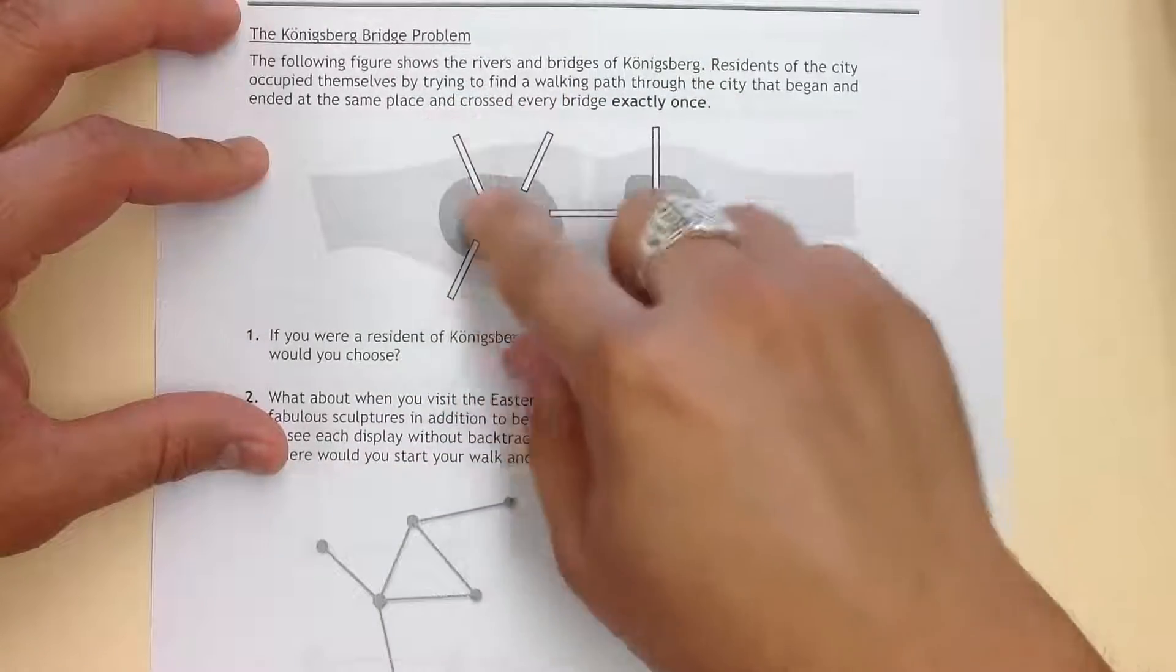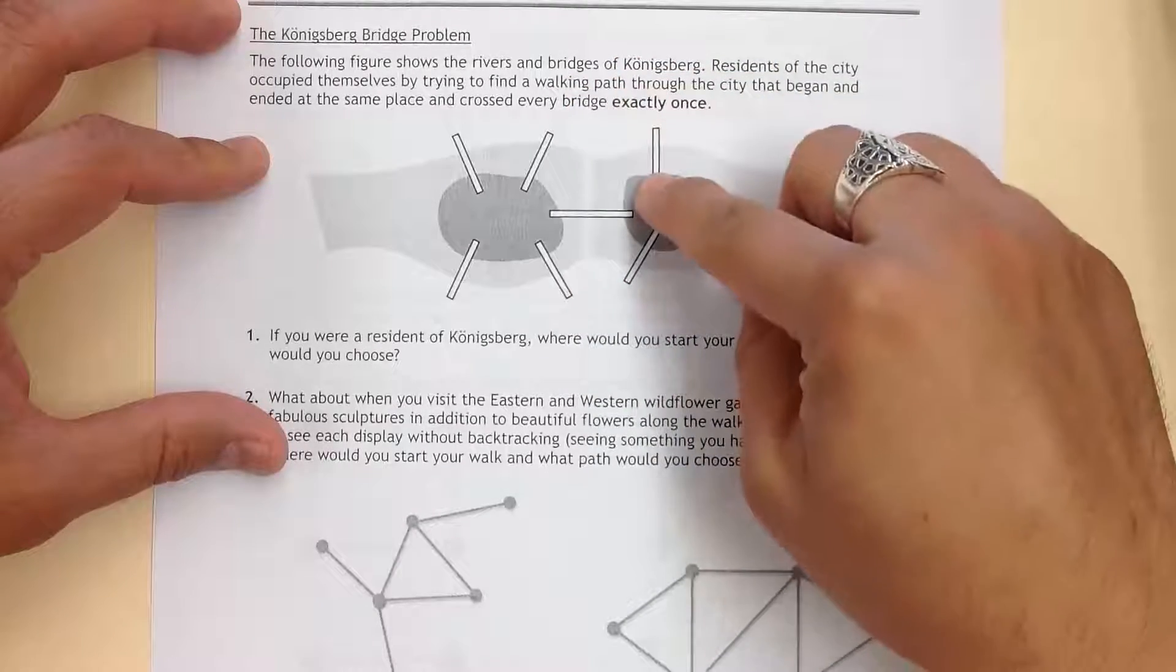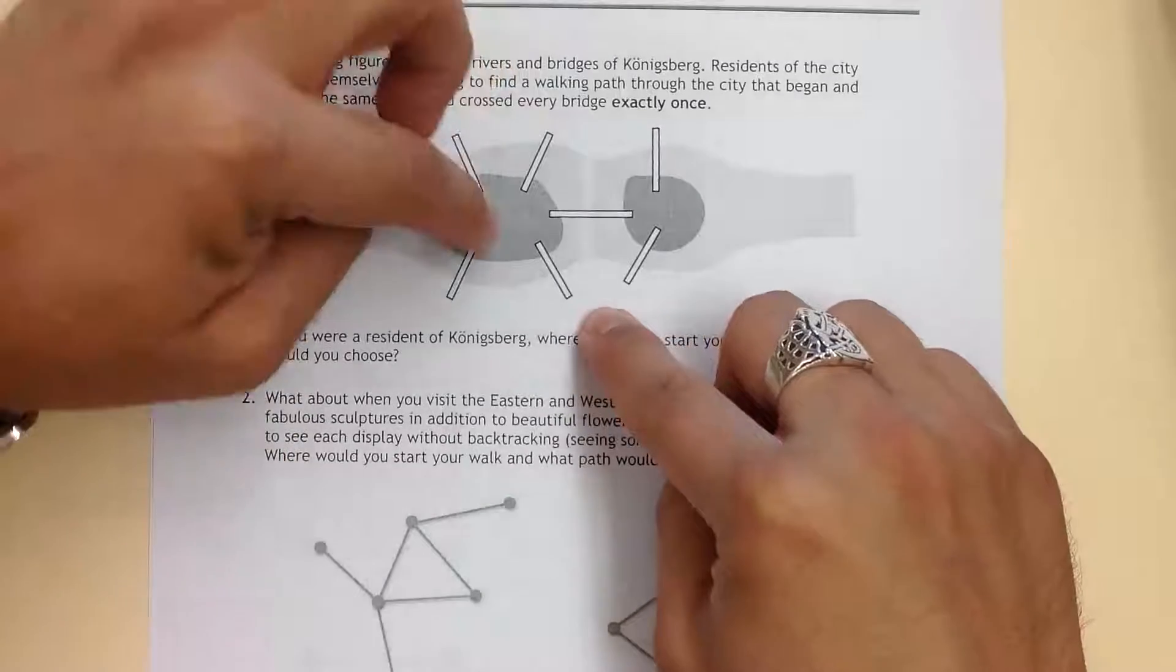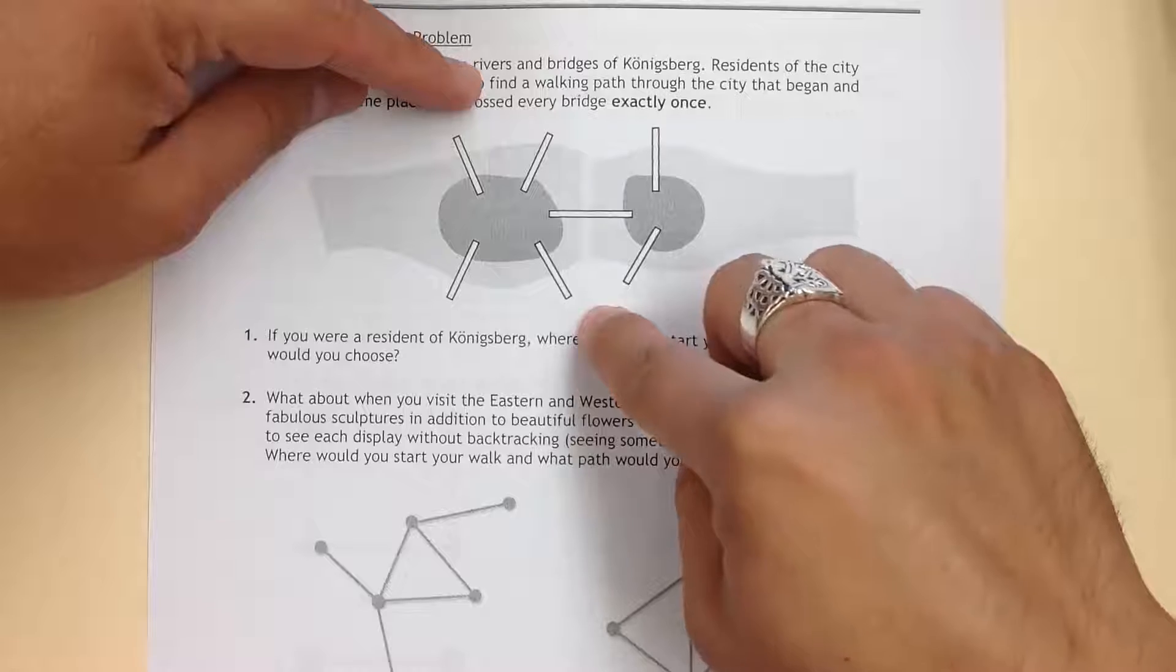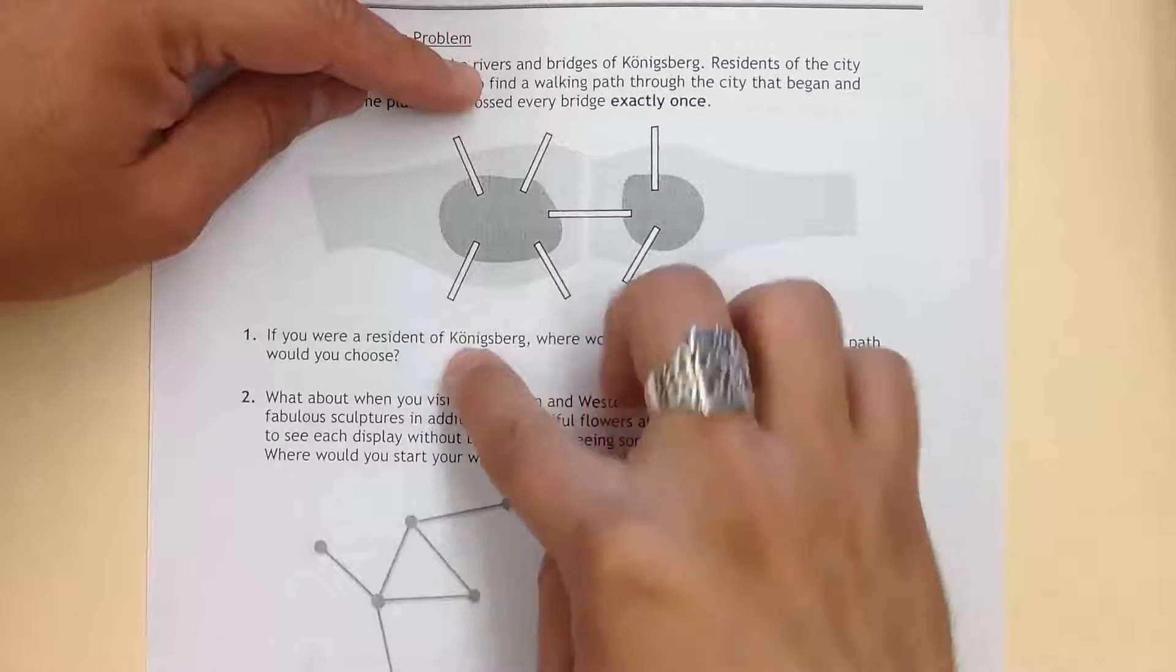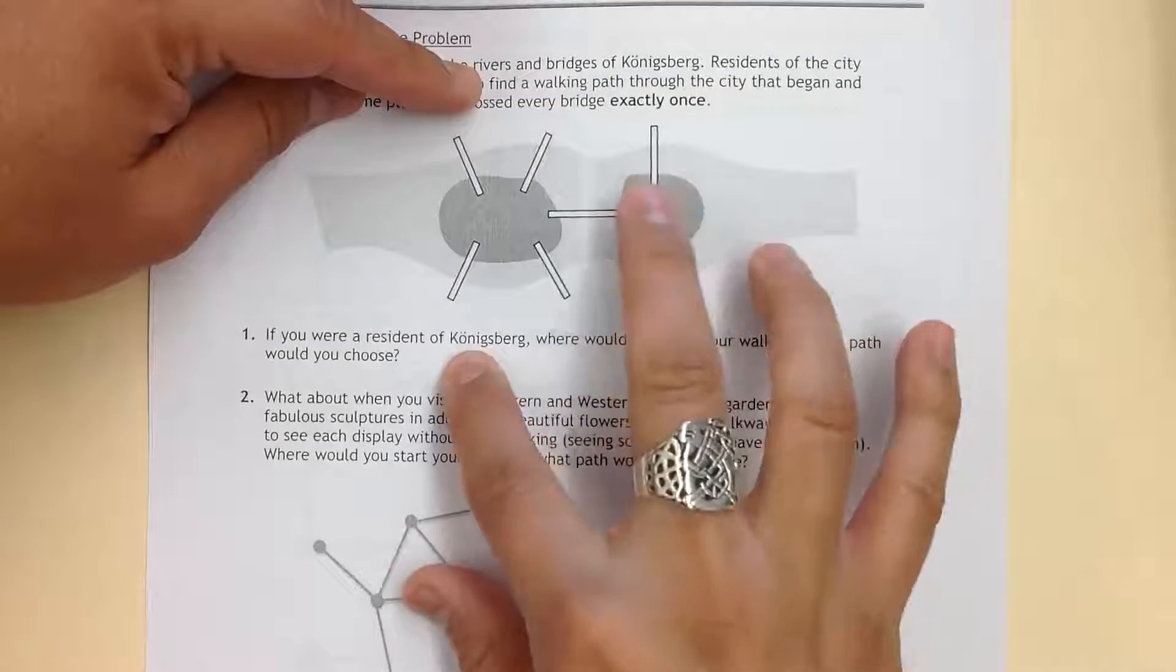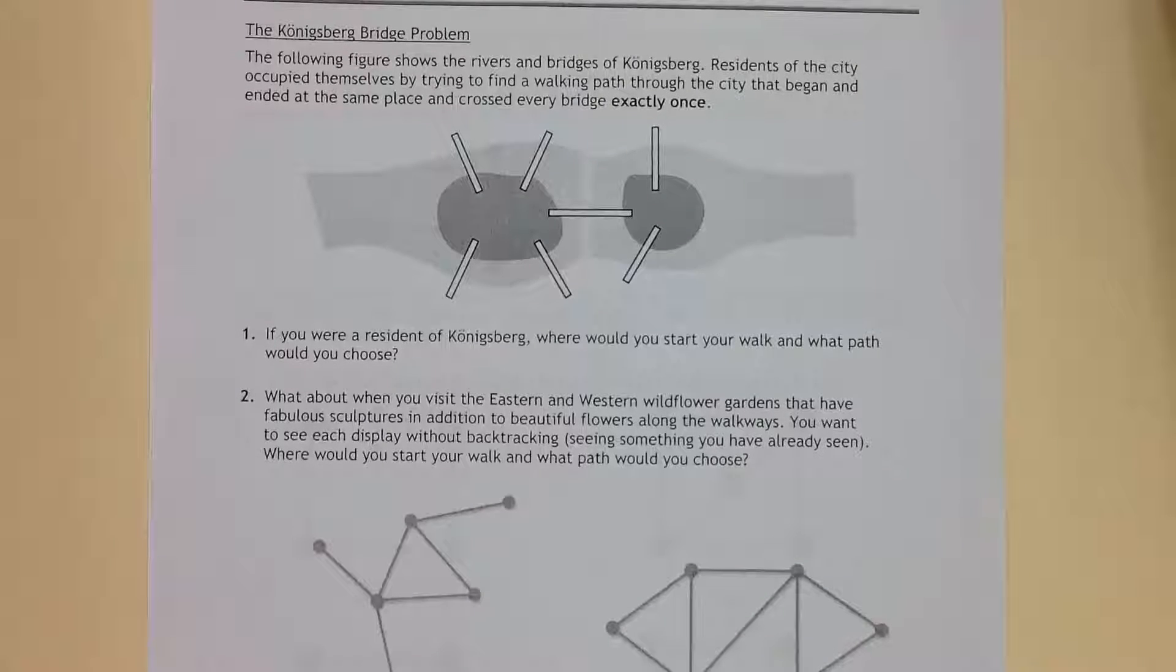So we have two bridges right here. We can cross it once and then come back to shore, then go over back here, then cross over here. Now remember, we have to get back to this shore since this is where we started, go through this path and then back to this one. There's no way we can get back, there's no other bridges. So you can try this for hours and not find a path. There's a reason for this.